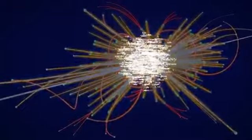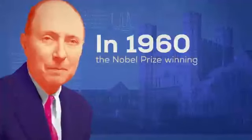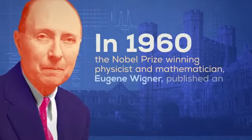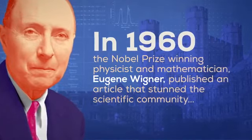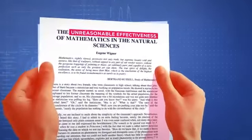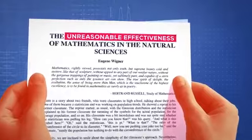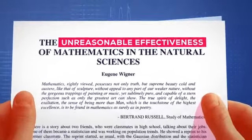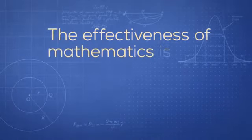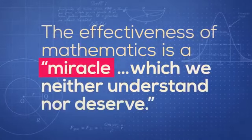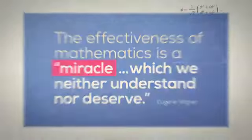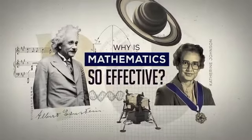How do we explain the astonishing applicability of math to the physical world? In 1960, the Nobel Prize-winning physicist and mathematician Eugene Wigner published an article that stunned the scientific community entitled, The Unreasonable Effectiveness of Mathematics in the Natural Sciences. Wigner concluded that the effectiveness of mathematics is a miracle, which we neither understand nor deserve. Why is mathematics so effective?